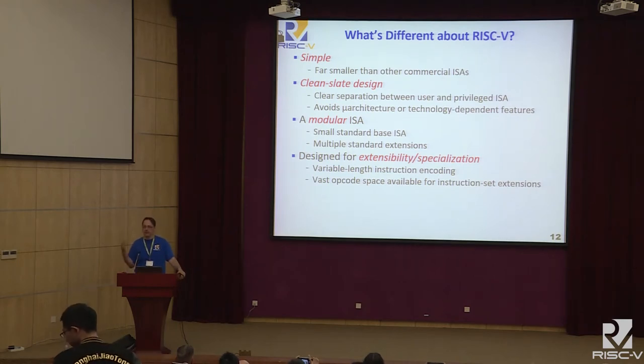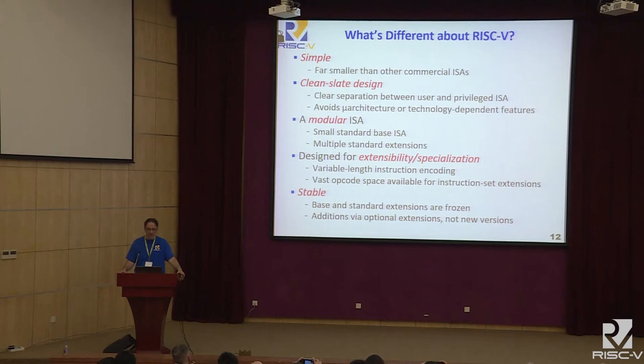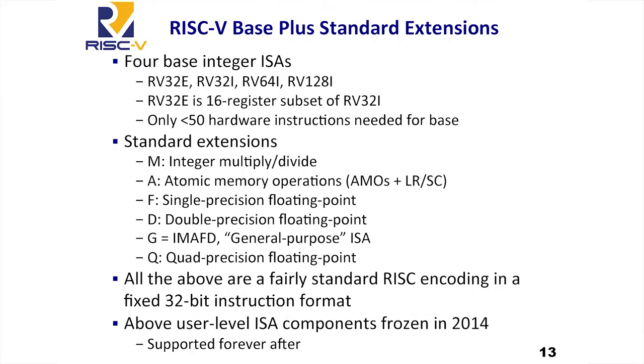We wanted to avoid anything tied to a particular micro-architecture or implementation technology. It was very, very modular — a very small standard ISA plus extensions that you plug together to make the ISA unique for your application. It was really designed for extensibility and specialization. We left a lot of opcode space available to add extensions without disturbing the general software. We also designed it from the beginning to have variable instruction encoding to give basically endless opcode space for extensions. The way we expand the instruction set is by adding new modules over time rather than changing versions of the base. Another big reason for simplicity is a selfish one — I like to teach computer architecture in as few lectures as possible.